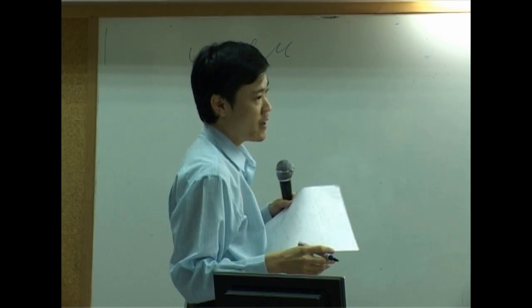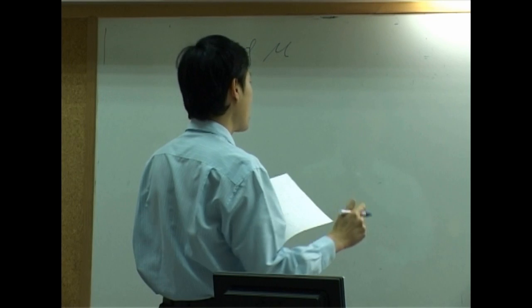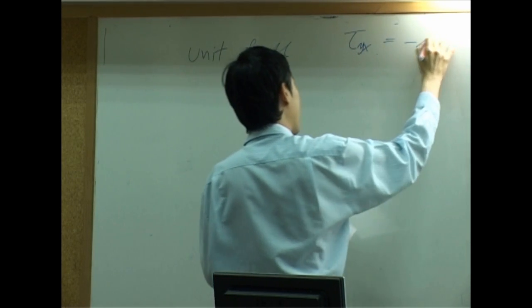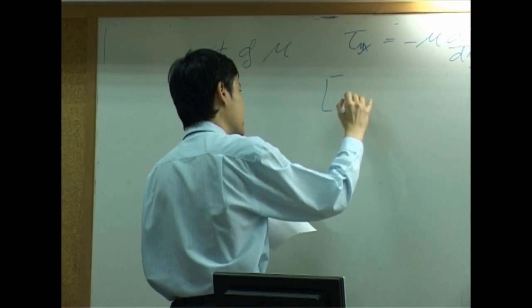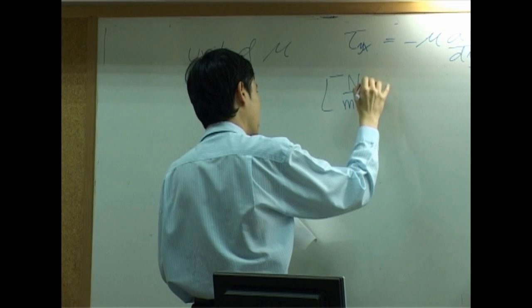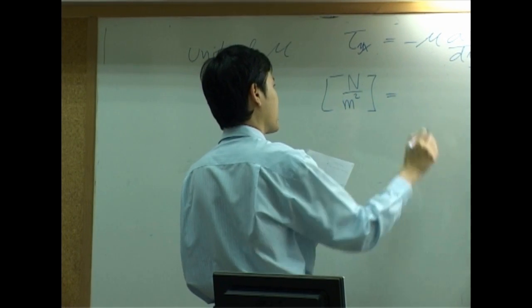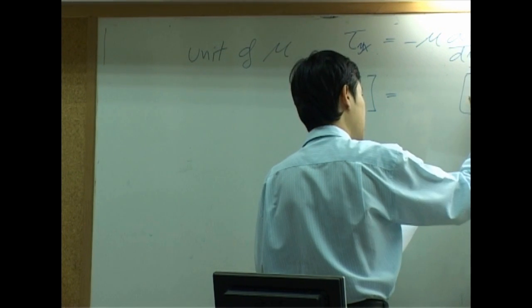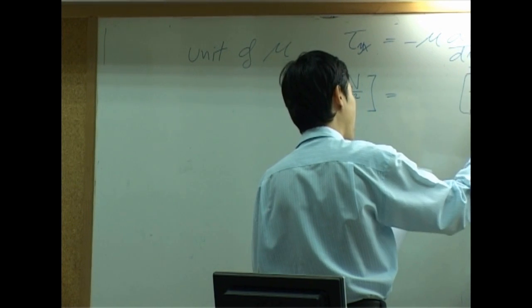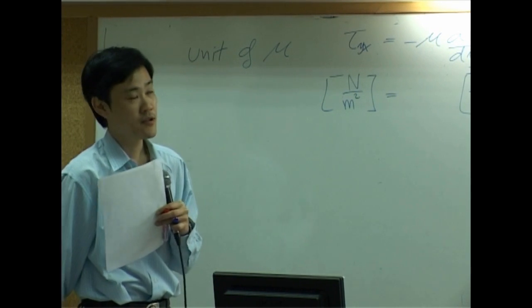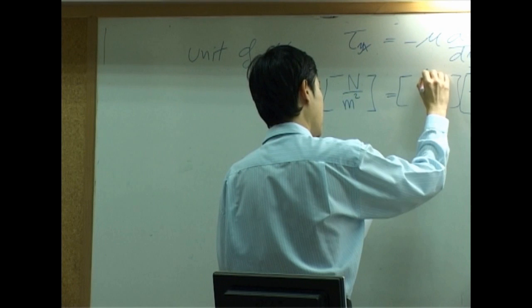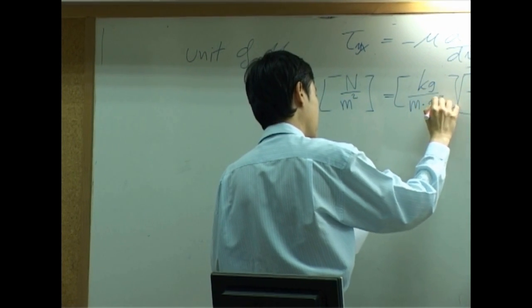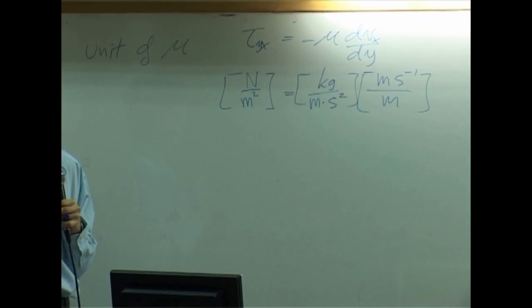If you consider a unit of viscosity, according to that equation, to the Newton's law, tau yx equal to minus mu dvx by dy. So the unit of tau supposed to be Newton per square meter, unit of velocity here is meter per second divided by y, which is meter. So in order to get the unit balance, the viscosity is supposed to have unit of kilogram per meter per second square. This is unit of viscosity.